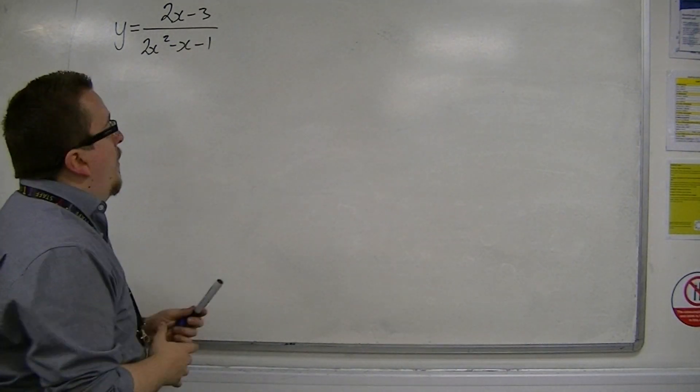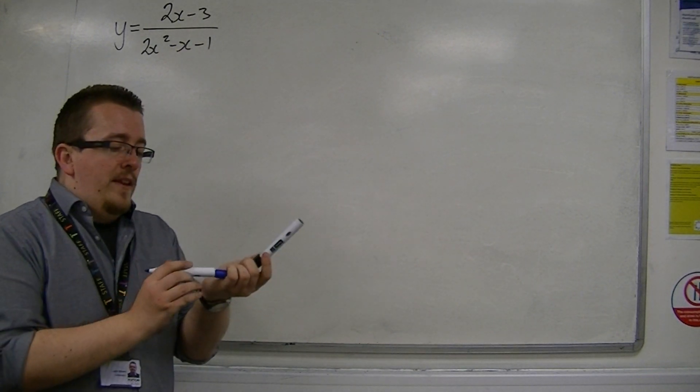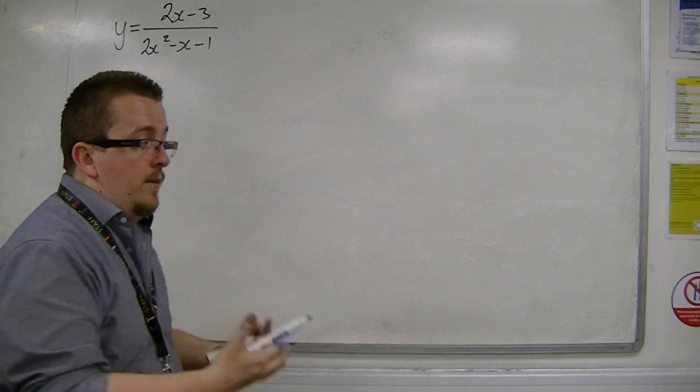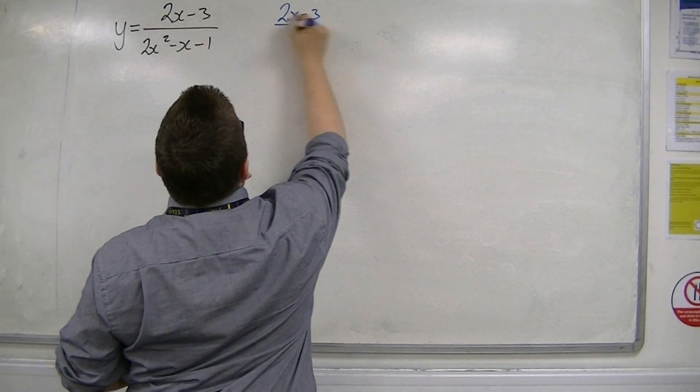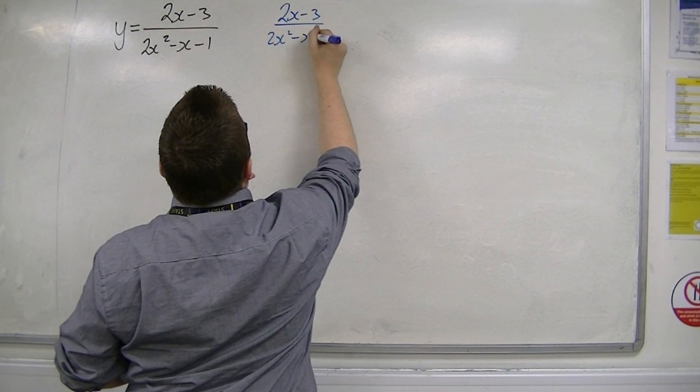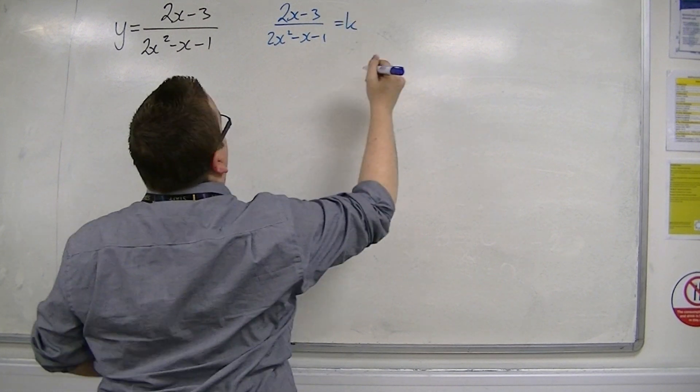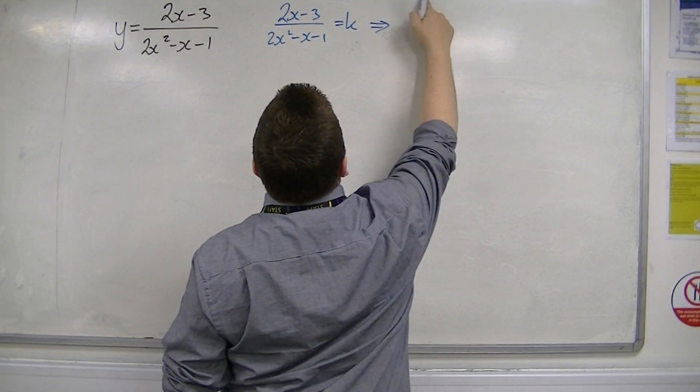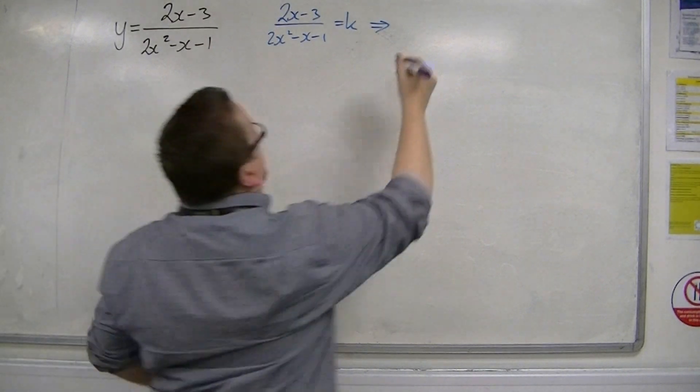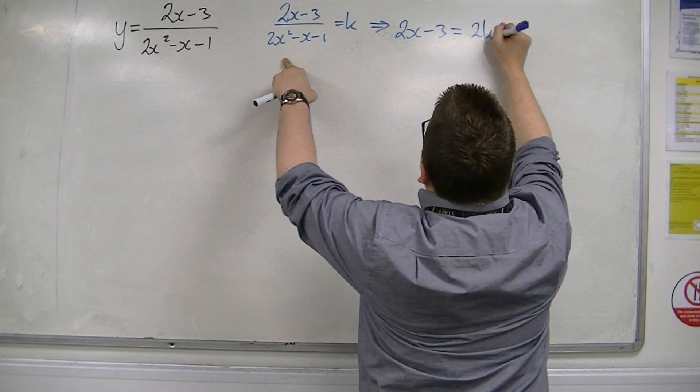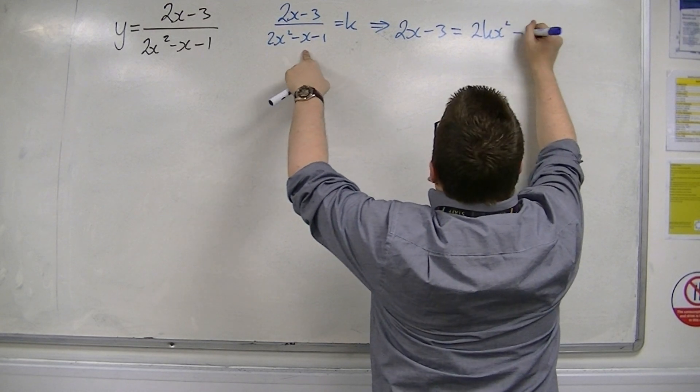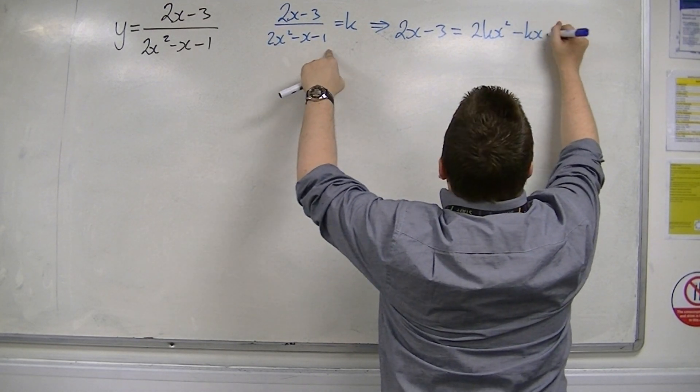So, first of all, we are going to want to find where this cuts y equals k. So I put 2x minus 3 over 2x squared minus x minus 1 equal to k. Now you're going to want to multiply through by the denominator, so I'm going to have 2x minus 3 is equal to 2kx squared minus kx minus k.